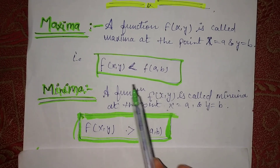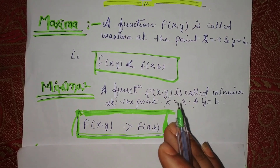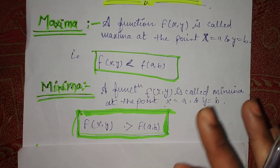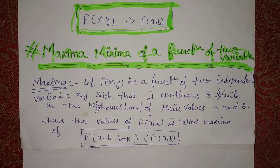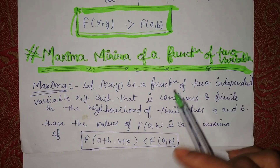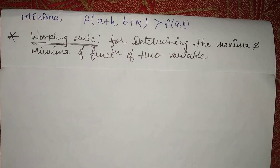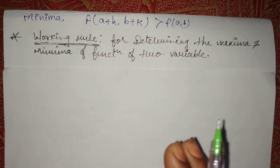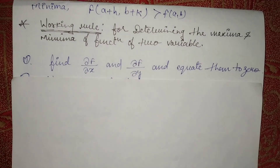This is the definition for maxima and minima — this is the function and these are the roots. You'll understand how to determine whether it's maxima or minima when we solve questions. Just read this statement; the rule is more important. So let's move to the working rule for determining maxima and minima of a function of two variables. This rule is very important — once you understand it well, you can solve any question.